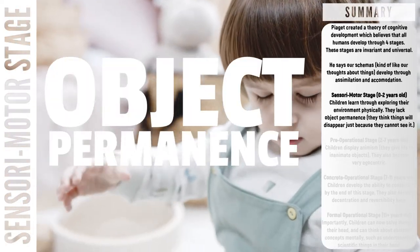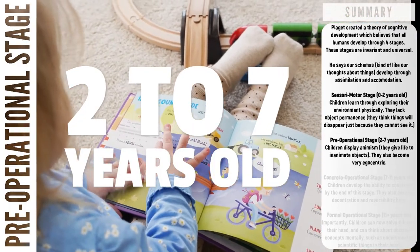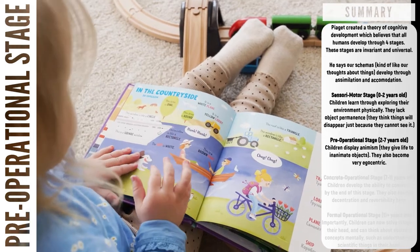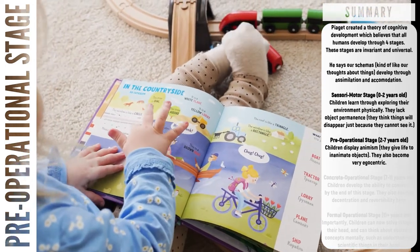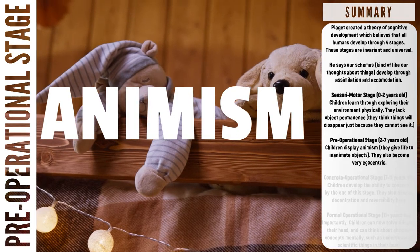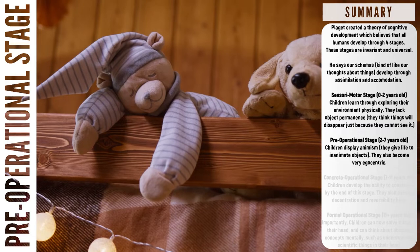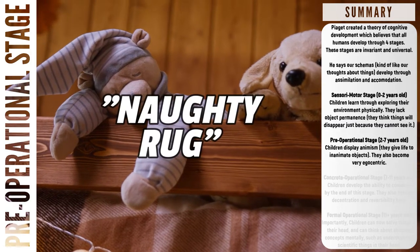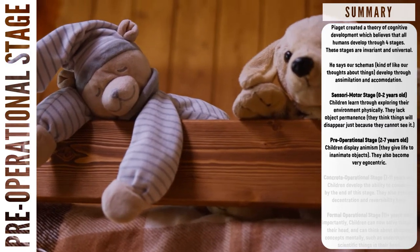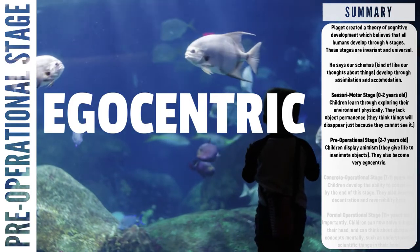Once we move to the two to seven year old range, we move into the pre-operational stage. In this stage we develop animism, which is making the mistake of believing that inanimate objects like toys or furniture actually have feelings. You may hear a child call a rug naughty because they've just tripped over it. Children in this stage are also really egocentric, which simply means they can't put themselves in other people's shoes.